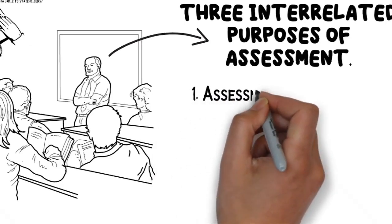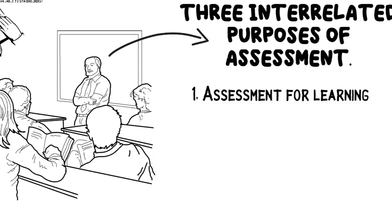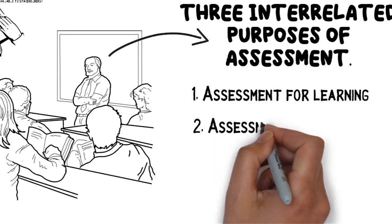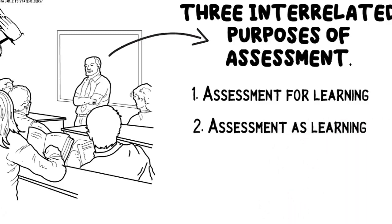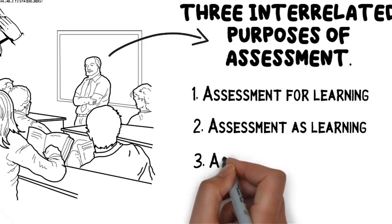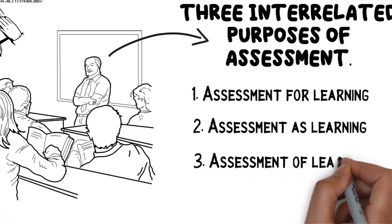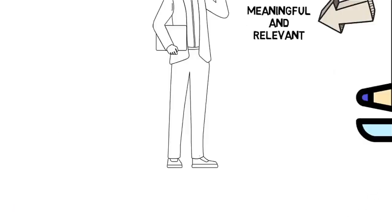Number one is assessment for learning. Teachers provide feedback to the student about their learning and how to improve. Number two, assessment as learning. Students use self-assessment and teachers' feedback to reflect on their learning, consolidate their understanding, and work toward learning goals. Number three, assessment of learning. Assist teacher to use evidence of student learning to assess student achievement against learning goals and standards.